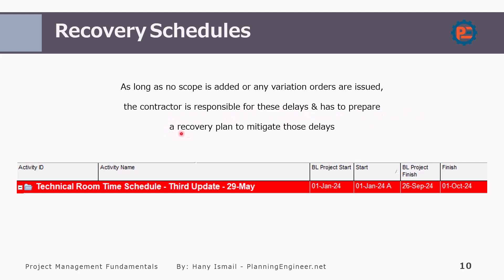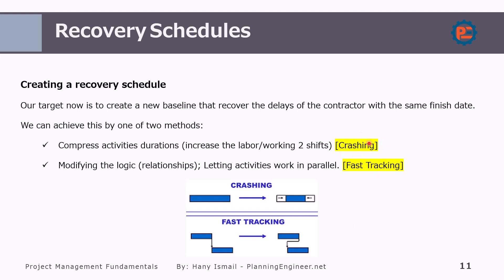The contractor has to prepare a recovery plan to mitigate those delays. There are two ways to do recovery scheduling: crashing and fast tracking. These are the main two techniques. Simply, crashing — from its name — means reducing the duration of the activity, while fast tracking means working in parallel on the activities.